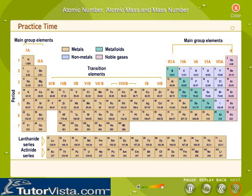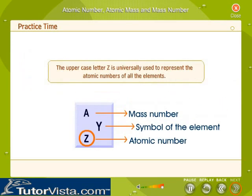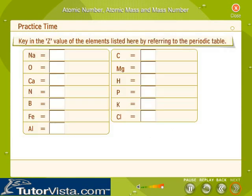In the periodic table, the precise address of the atoms of all the elements known to man is given. The atomic number is the whole number that is associated with the symbol of each element. Atomic number is written as a subscript to the left of the symbol of the element. The uppercase letter Z is universally used to represent the atomic numbers of all the elements. Key in the Z value of the elements listed here by referring to the periodic table.